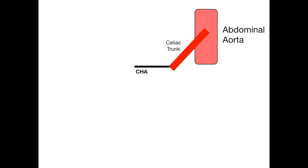The abdominal aorta provides major blood supply downward through the abdomen and gives off the celiac trunk at the level of T12. The celiac trunk's first major branch is the common hepatic artery. The common hepatic artery splits into two arteries: the proper hepatic going upward and the gastroduodenal going downward. We'll follow the proper hepatic now and come back to the gastroduodenal toward the end of this video.